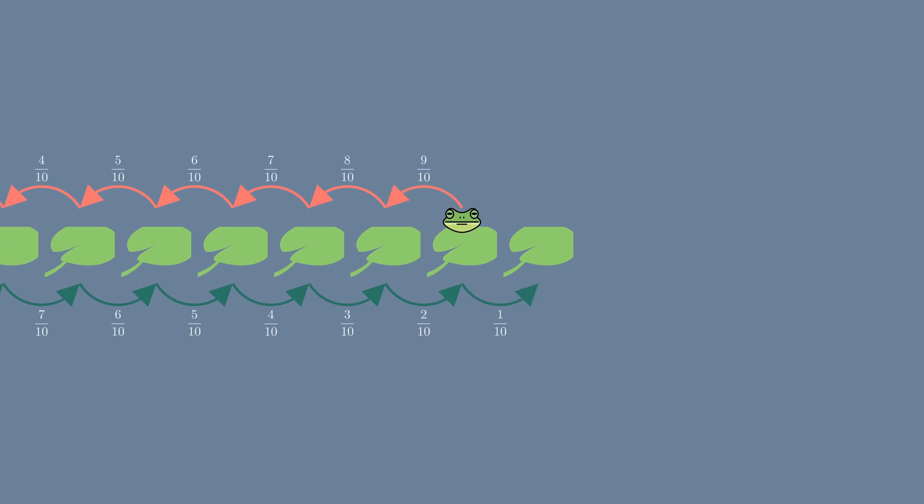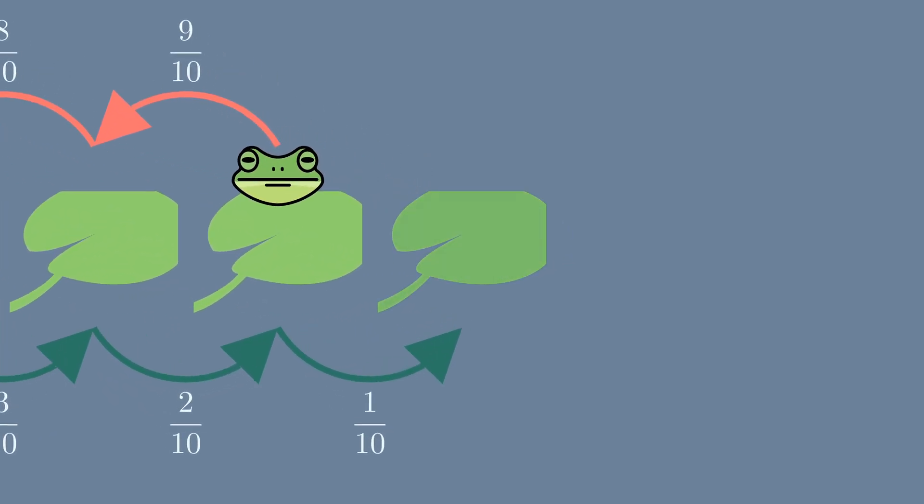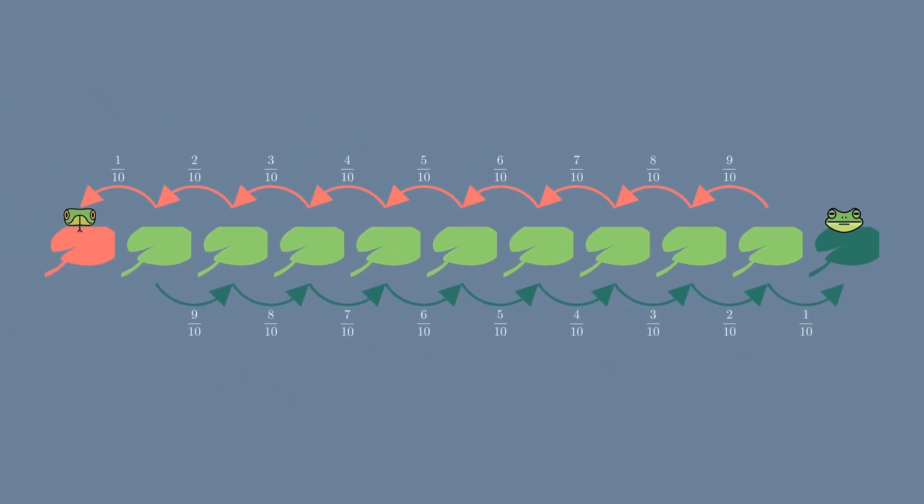When the frog reaches the last lily pad it will leave the pond and become free of danger. What is the probability that the frog will escape to freedom if it starts at the second lily pad?